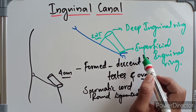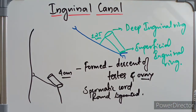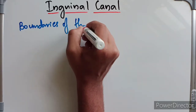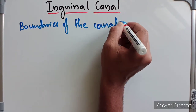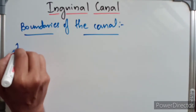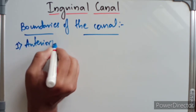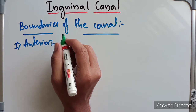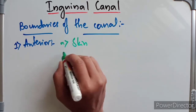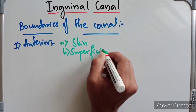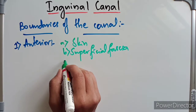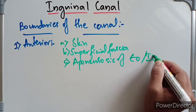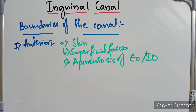The inguinal canal extends from the deep inguinal ring, which is an oval opening, to the superficial inguinal ring, which is a triangular gap. Now coming to the boundaries: anteriorly, the anterior wall is formed by the skin, superficial fascia, and the aponeuroses of the external oblique and the internal oblique.